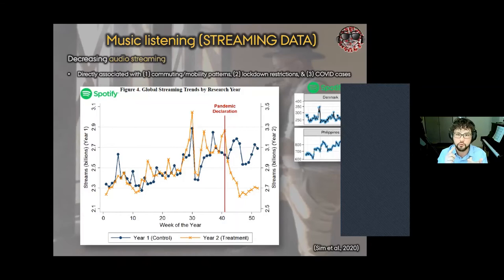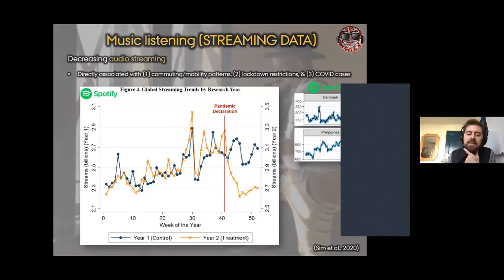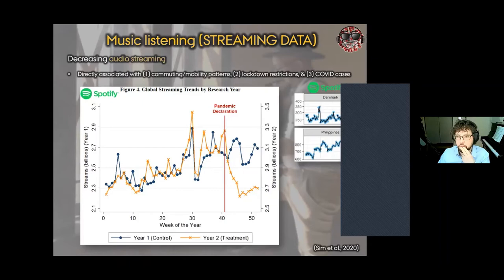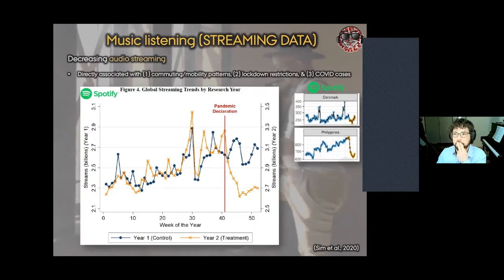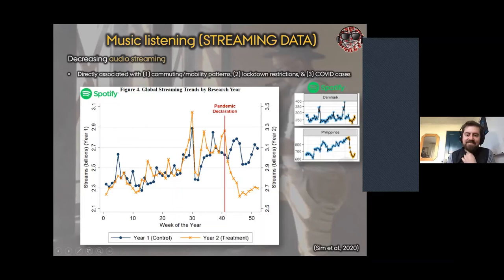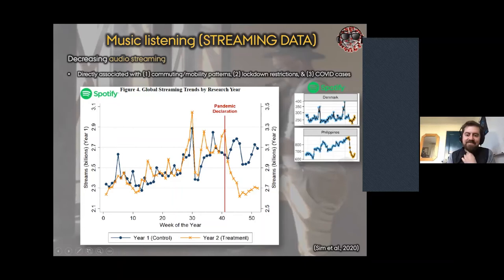As commuting went down, Spotify streaming also went down. In countries like Denmark with relatively short commuting times, that didn't happen as much as in the Philippines with longer commuting times. It also associates with lockdown restrictions and COVID cases but not COVID deaths. What happened at the same time was that YouTube streaming went up. So it seems like people were migrating from audio streaming to video streaming.